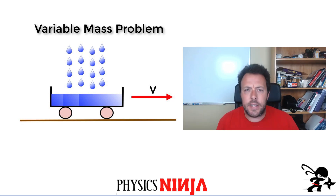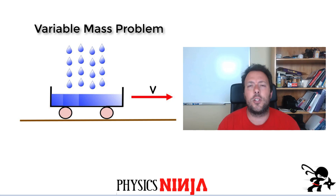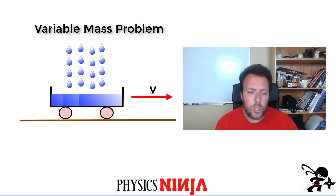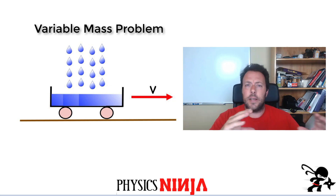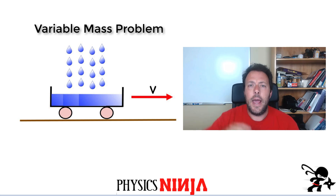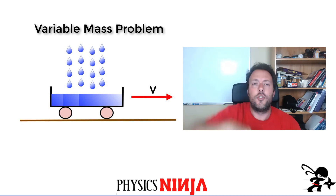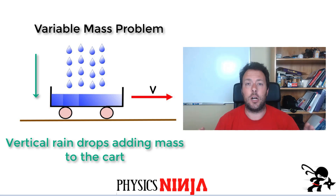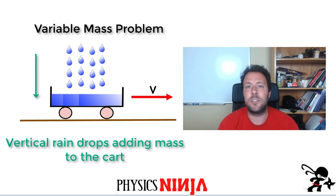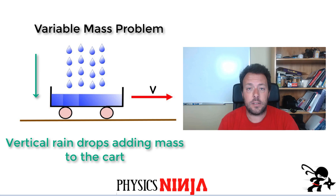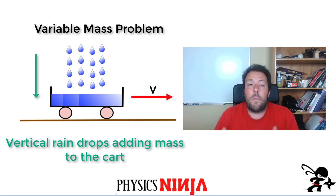This is a standard classical problem in physics when you're looking at a change of momentum in systems with variable mass. We assume we have some cart moving along a flat surface at some velocity V, and there are raindrops falling vertically into the cart, increasing the mass of the cart. So what happens to the velocity and the acceleration of the cart when rain keeps adding more and more mass?